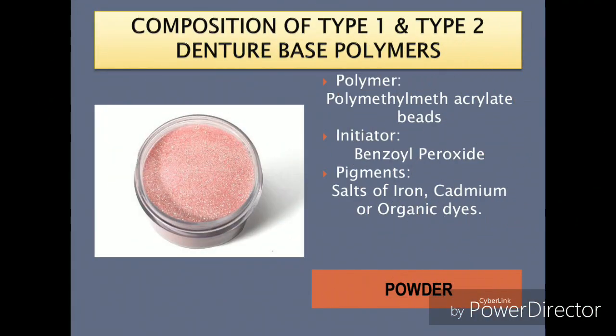Let's check out the composition of type one and type two denture base polymers. First, the powder component: it contains polymethyl methacrylate beads with benzoyl peroxide as the initiator, which is responsible for the start of the polymerization reaction. It also contains salts of cadmium and iron, which are the pigments that give the pinkish color to the denture base.